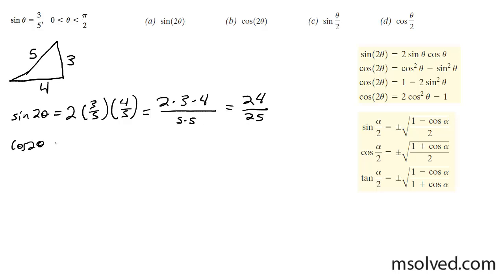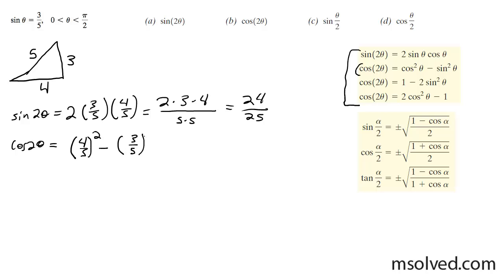For the cosine of 2 theta — the double angle of cosine — I can choose any one of the formulas listed up here. I'm just going to use the second one. So I'm going to take cosine squared, so cosine was 4 over 5 squared, minus sine squared, which is 3 over 5 squared. That ends up being 16 over 25 minus 9 over 25, and 16 minus 9 gives us 7 over 25.